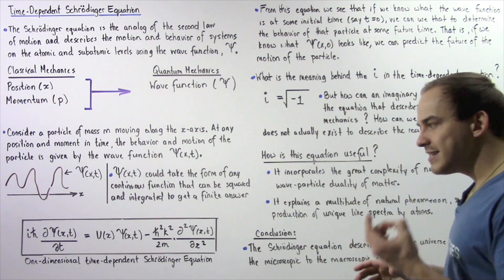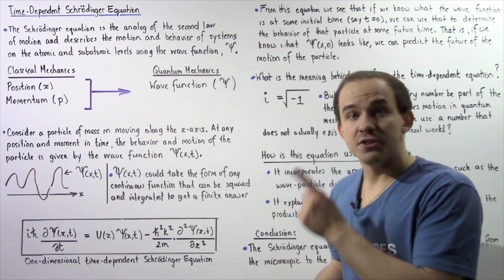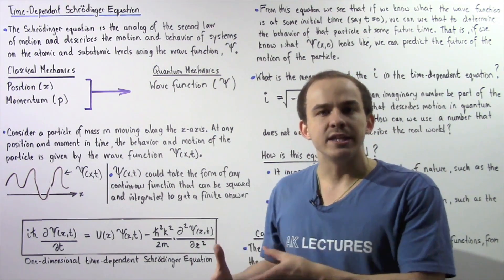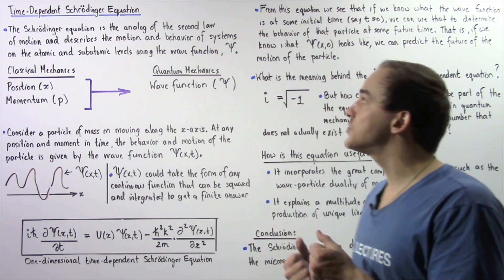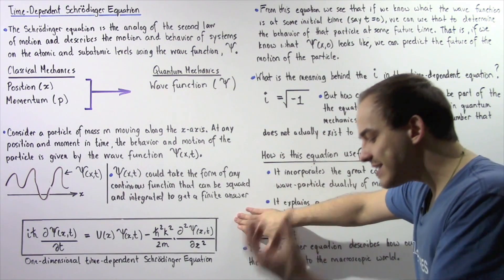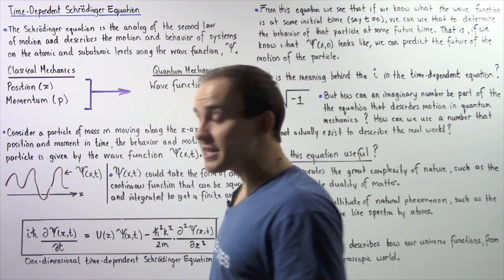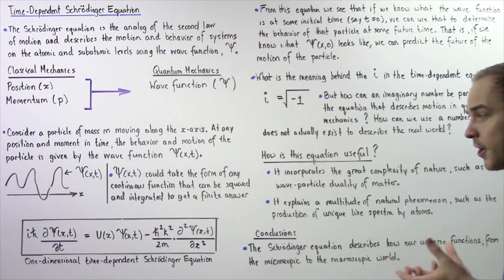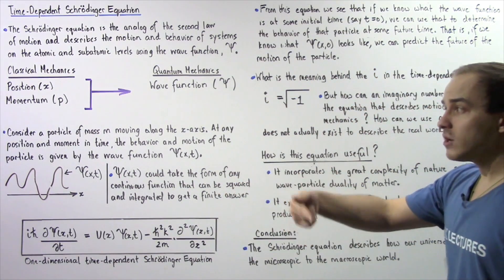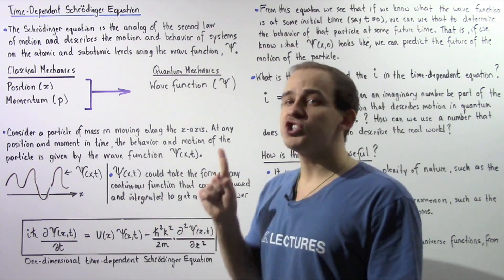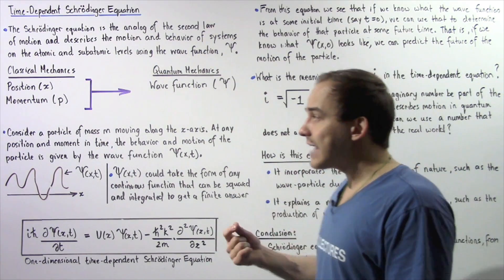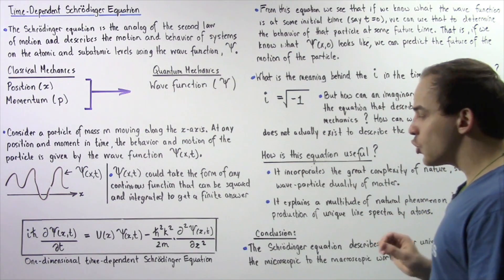Now notice earlier I said this equation was invented — this equation was not derived. In the same exact way that Sir Isaac Newton invented the second law of motion in classical mechanics, Erwin Schrödinger invented this equation. And then this equation was tested over and over again experimentally and it was basically confirmed that this equation is in fact true. In the same exact way that the equation force equals mass times acceleration was also invented by Sir Isaac Newton and then was tested over and over to actually confirm that it was in fact true.